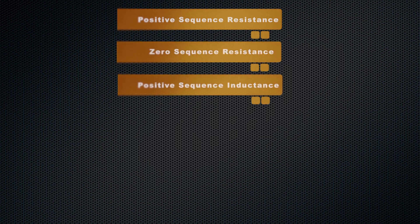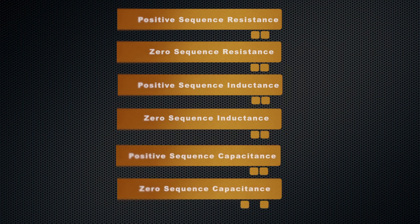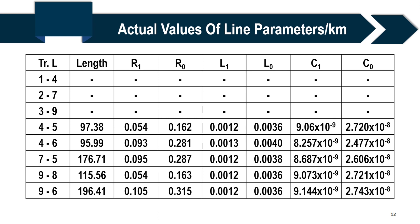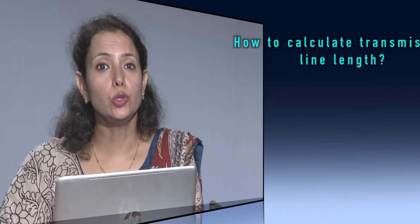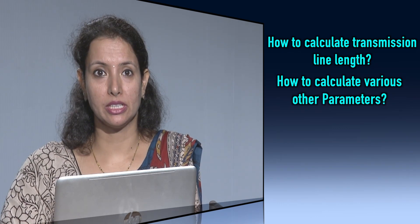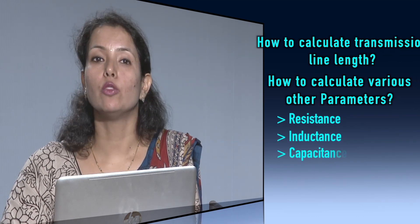For our example, we considered only one transmission line between buses 4 and 5. In a similar manner, we can find the values of different transmission line parameters — positive sequence resistance, zero sequence resistance, positive sequence inductance, zero sequence inductance, positive sequence capacitance, zero sequence capacitance, as well as transmission line length for all buses. These values will be further used for the modeling of the 3-Machine 9-Bus System. In today's session, we have seen how to calculate transmission line length, resistance, inductance, and capacitance from per unit values, using base voltage and base power.